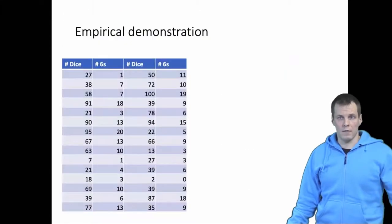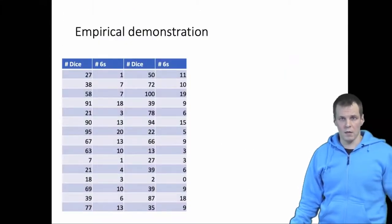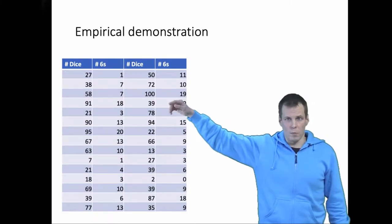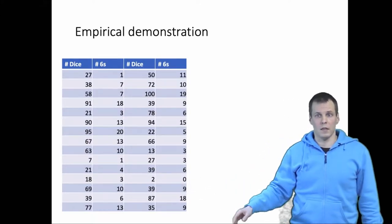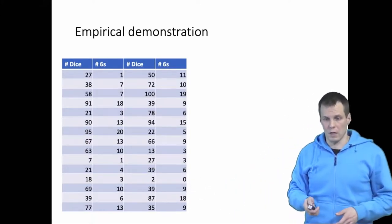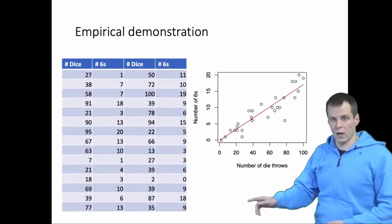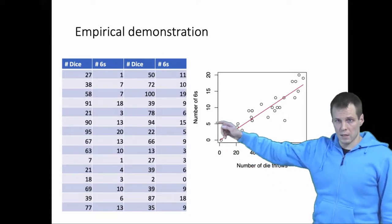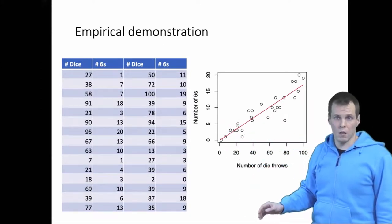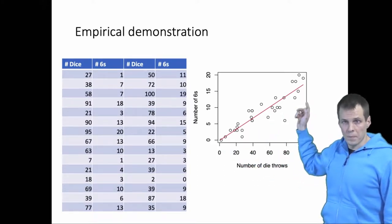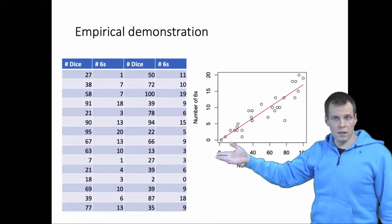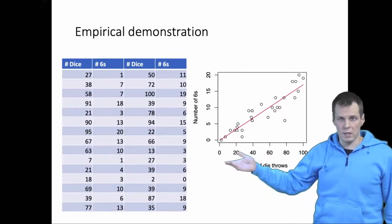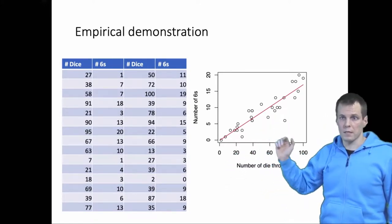To demonstrate, here is an empirical example with dice. We have 30 sets of die throws — the number of dice thrown is the independent variable and the number of sixes is the dependent variable. A regression line fits the data pretty well. There is heteroscedasticity — the variance is greater at higher values — but using robust standard errors handles that, and regression analysis is fine here.